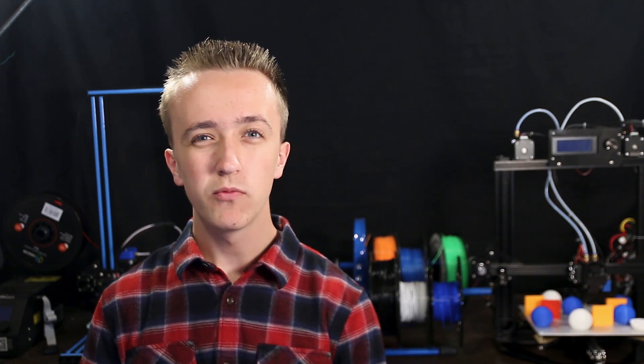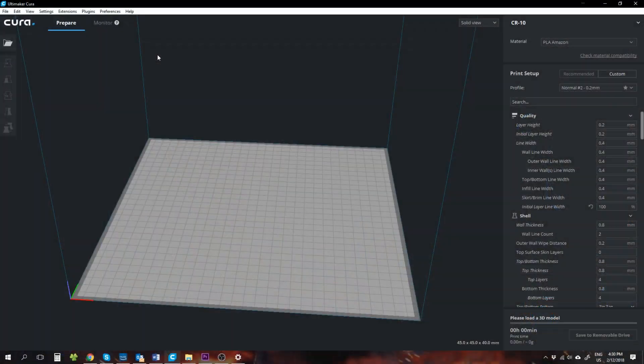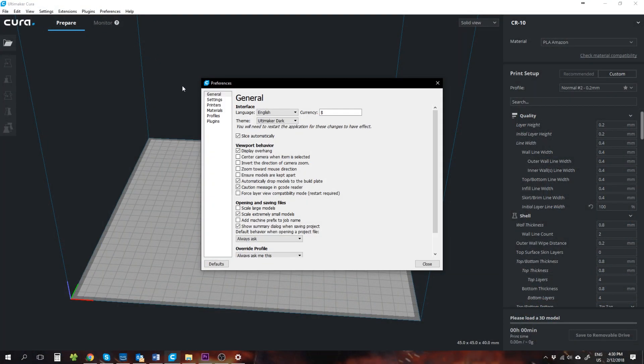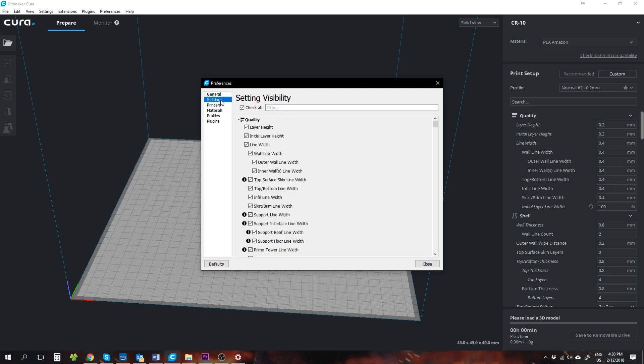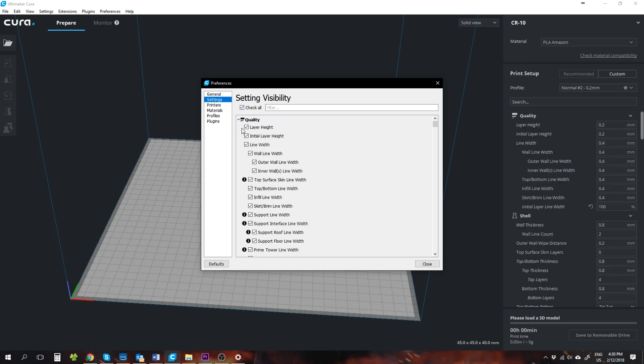Now when you start off the program for the first time, you probably won't see the screen just like this, as many of the more advanced options are hidden first. So what you want to do is go to preferences, configure Cura, which will open a panel and on the left in the navigation you can navigate to settings and then put in the tick mark for show all options.